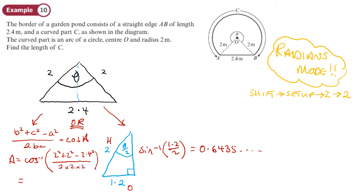Now comes the moment of truth. If I do that, so shift cos, still in radians mode, 2 squared plus 2 squared minus 2.4 squared divided by 2 times 2 times 2, and I get 1.28. Oh, that's why, because I haven't times it by 2 yet.